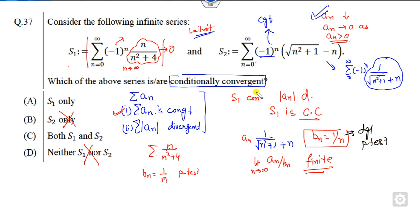So it means the modulus of this series is divergent. It means this condition is also satisfied. So S2 is also conditionally convergent. So it means both are the correct options, A is also canceled out.